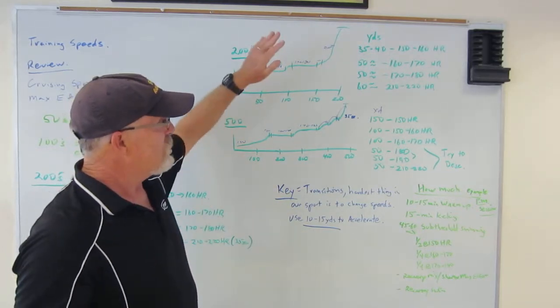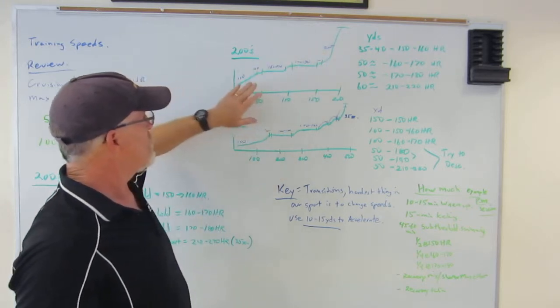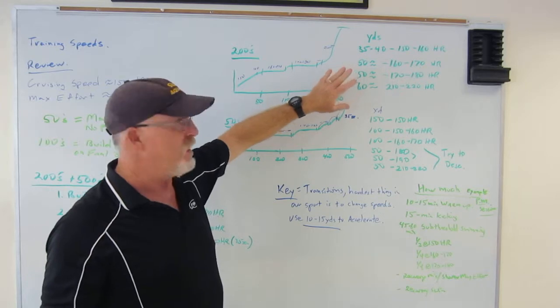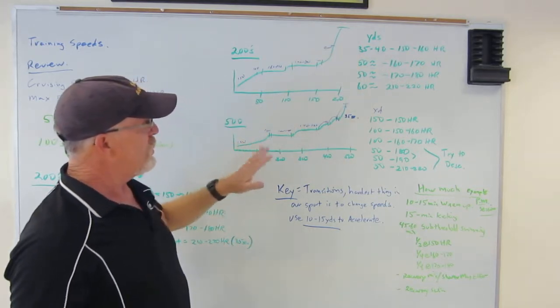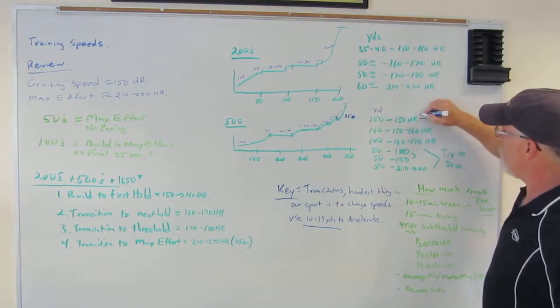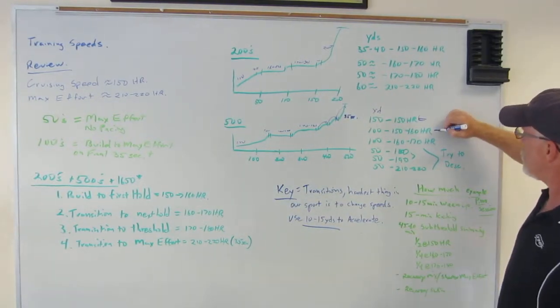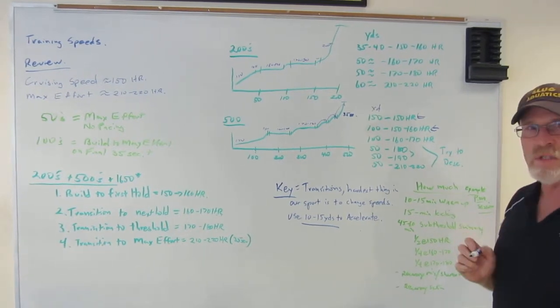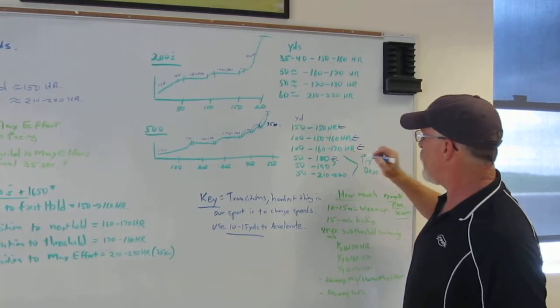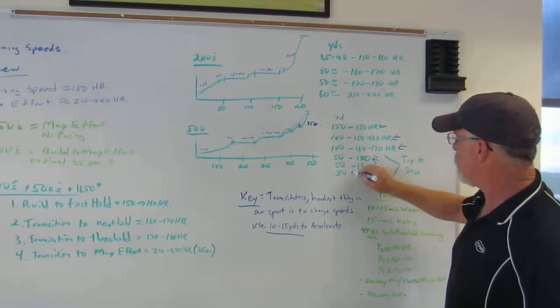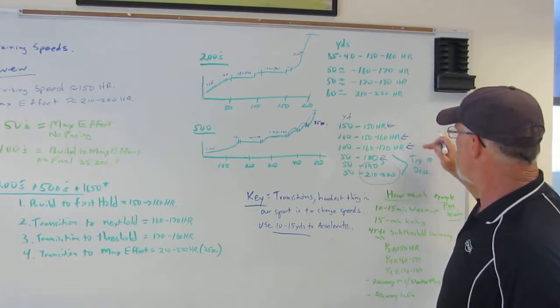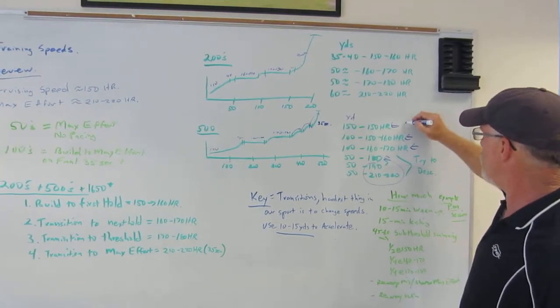So in your middle distance events, you've got different heart rates with corresponding different effort levels during the race. So you need to know what it feels like to train at 150 to 160 heart rate. You need to know what it feels like to be at 170 at threshold and then to be at max effort. Max effort is easy. You're just going as hard as you can, but you want to make sure that you also have the ability to hold these speeds.